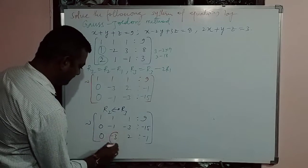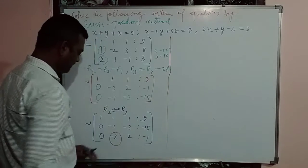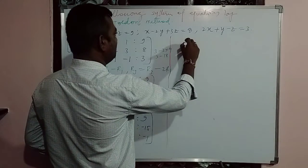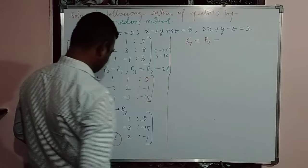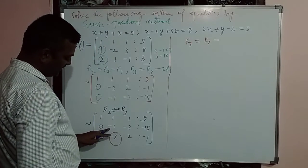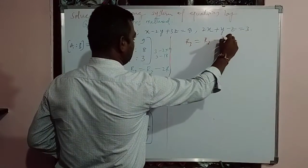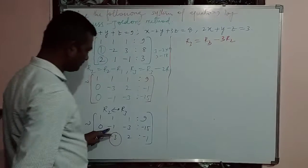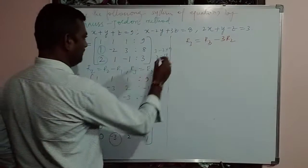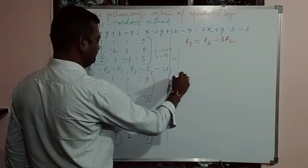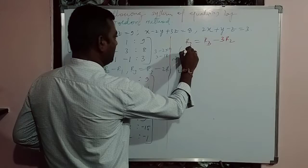Now I am going to make this element zero — the R3 element. R3 = R3 - 3×R2. The first entry of R3 is already 0, and the second entry -3 minus 3 times (-1) will become 0.